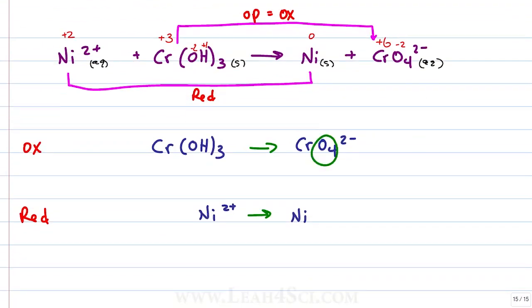If we have 4 oxygens in the products and only 3 in the reactants, we add 1 molecule of H2O, giving us a fourth oxygen.